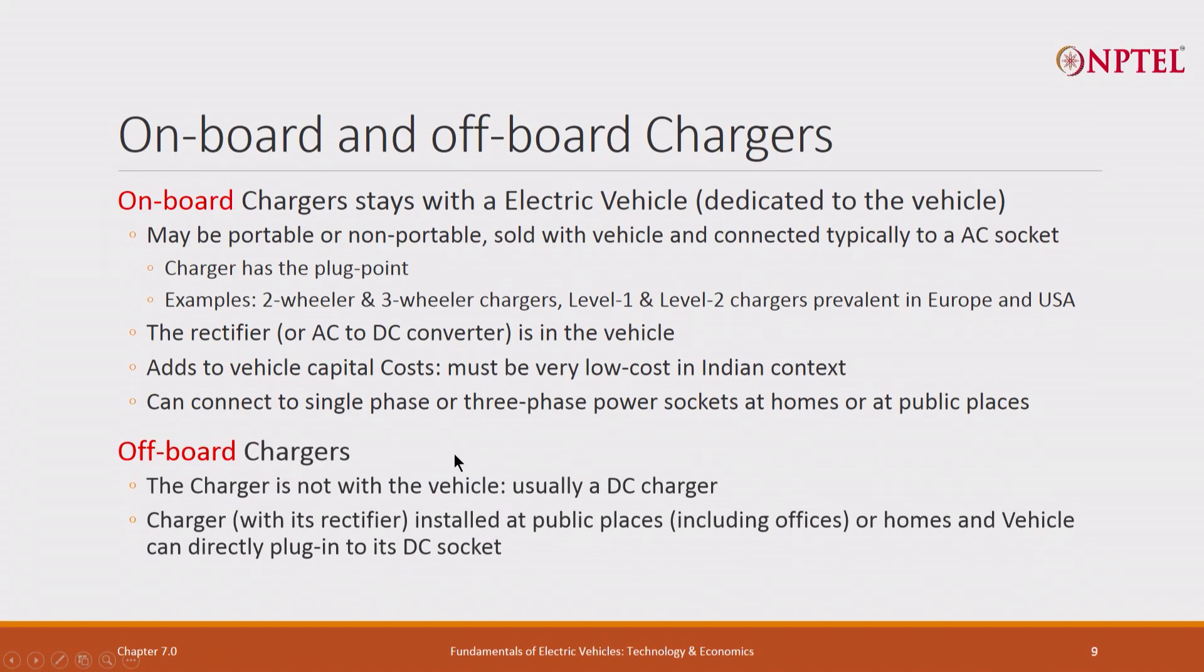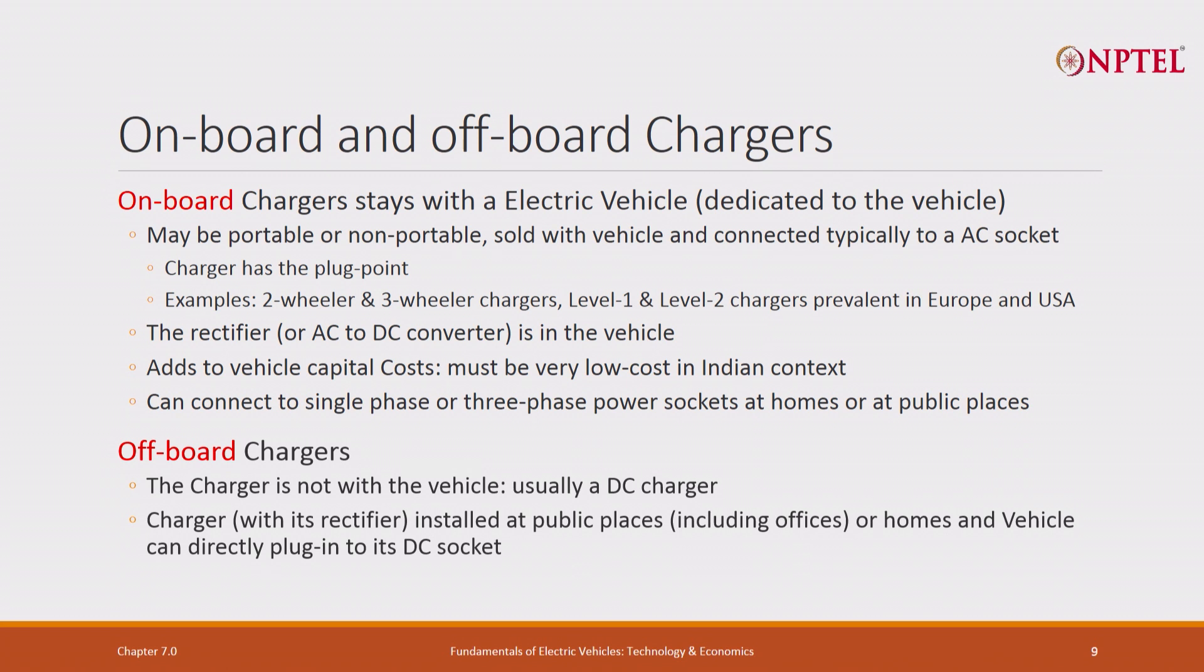Off-board chargers on the other hand, charger is not in the vehicle. Usually large and DC charger, sometimes AC also can be. The charger is installed in public places, including offices or homes. And the vehicle comes with a socket, DC socket if it is a DC charger, AC socket which will get plugged. We will talk both about on-board and off-board chargers.